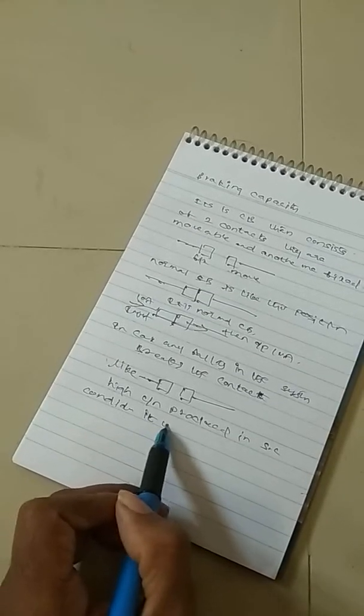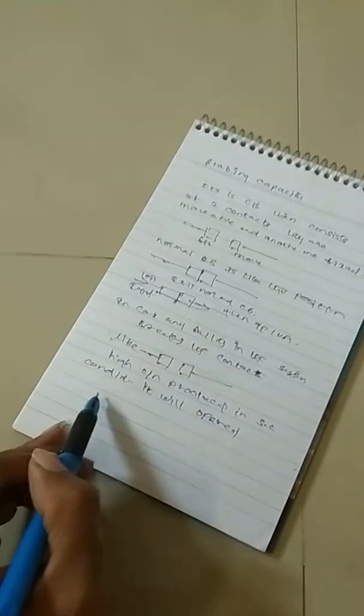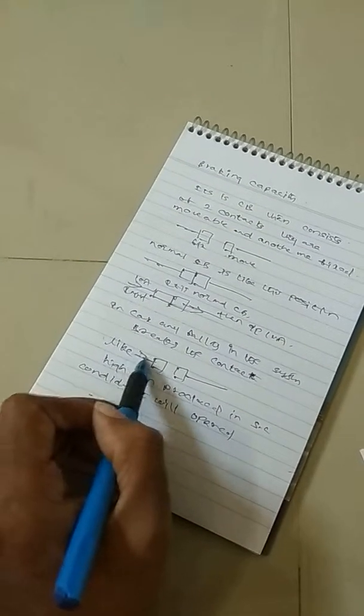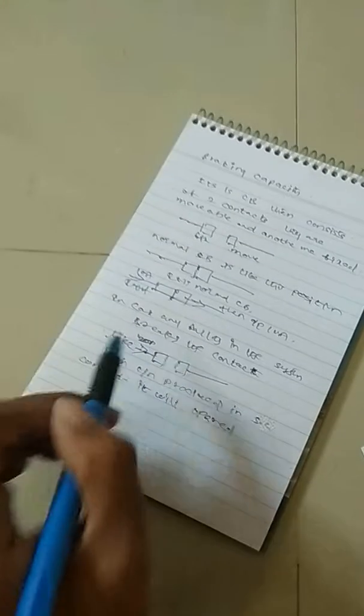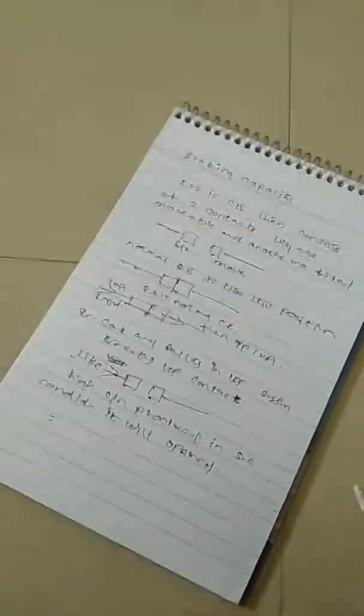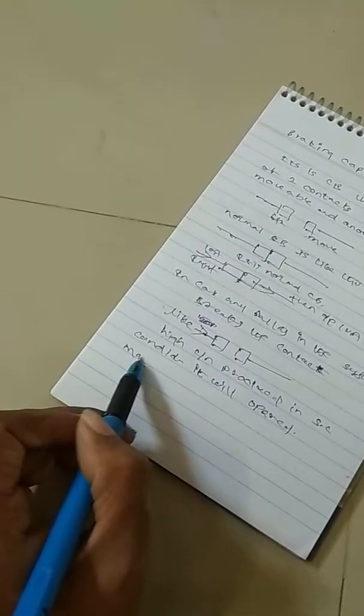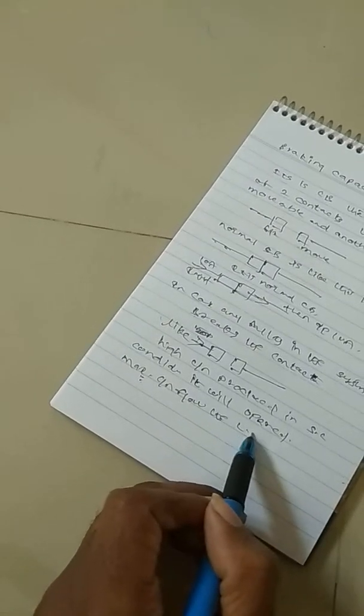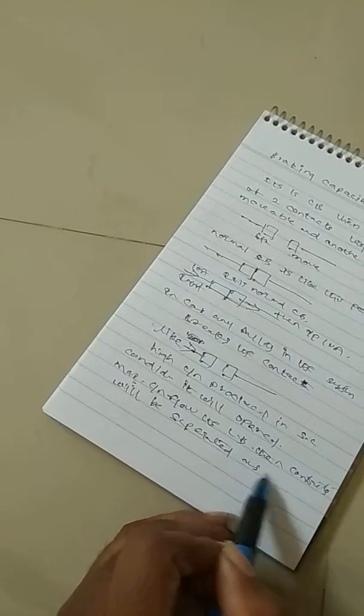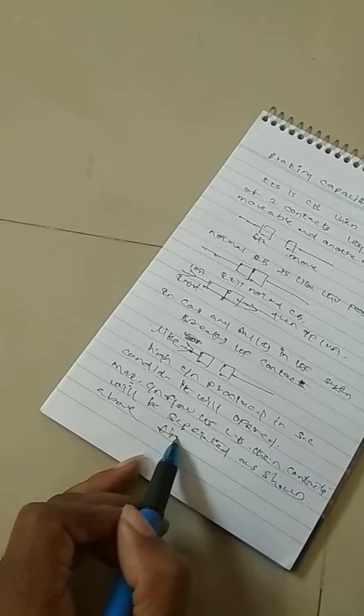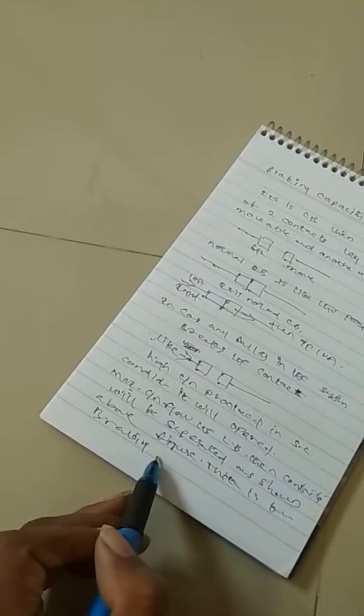It will operate at high current value, for example 20 amps. When maximum current flows in the circuit breaker, then contacts will be separated as shown in the above figure. That is known as breaking capacity. Next one is making capacity.